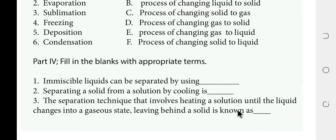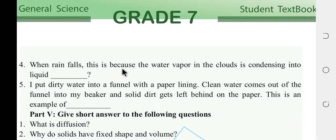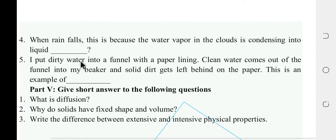When rainfall occurs, this is because the water vapor in clouds is condensing into liquid. If you put dirty water into a funnel with paper lining, clean water comes out of the funnel into the beaker and solid dirt is left behind on the paper — this is an example of filtration.